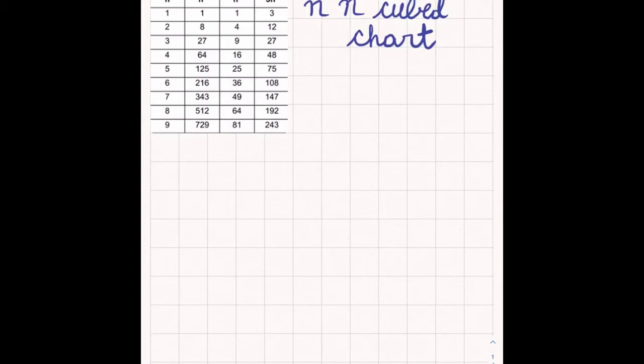When you cube, if you notice, when you cube 1, your answer is 1 digit. When you cube 2, your answer is 1 digit. But when you cube 3 and 4, your answers are 2 digits. So this is important for us to keep in mind.